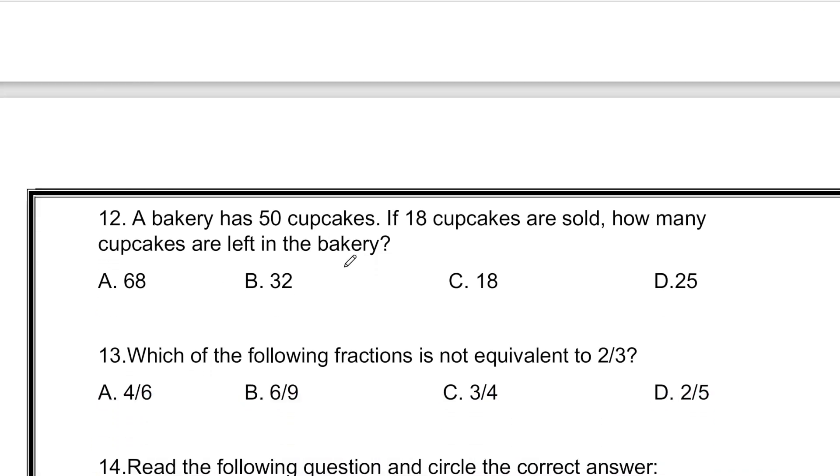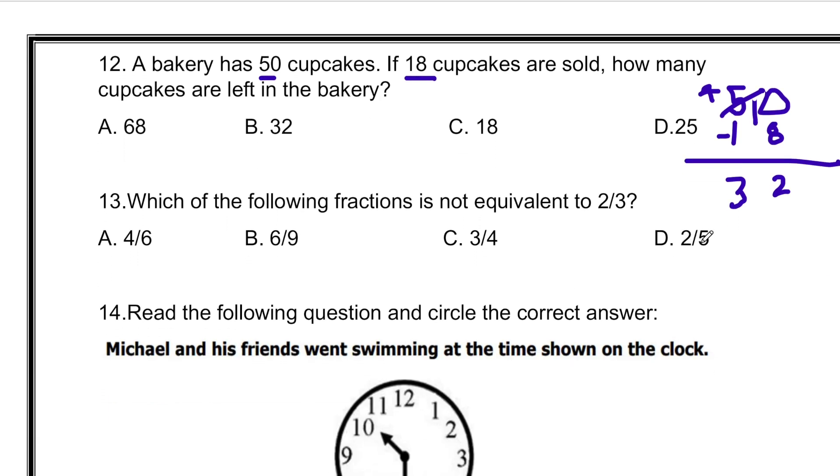A bakery has 50 cupcakes. If 18 cupcakes are sold, then how many cupcakes are left in the bakery? So we will minus 18 from 50. Let's minus. We cannot minus 8 from 0. That means 5 will turn into 4 and give 1 over here. 10 minus 8 is 2, and 4 minus 1 is 3. So the answer is 32.